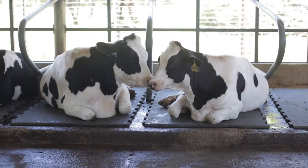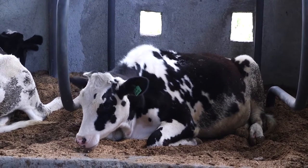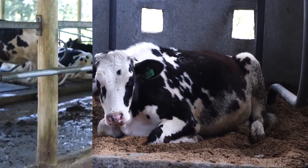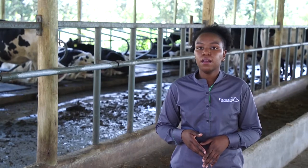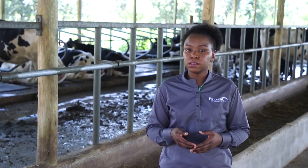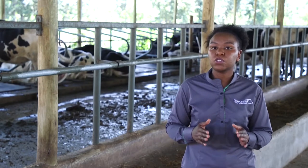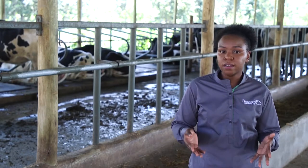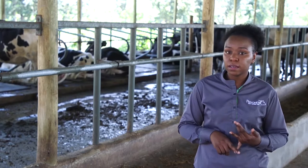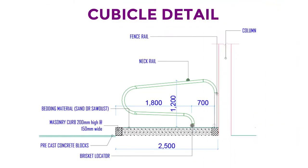The final dimension is shown by a cow lying down — her body covers about 1.2 meters in width, which also helps us know how wide the cubicle should be. The cubicle has various components that ensure it functions properly: first, the bedding; second, the cubicle divider itself; the brisket locator; the neck rail; and the curb.